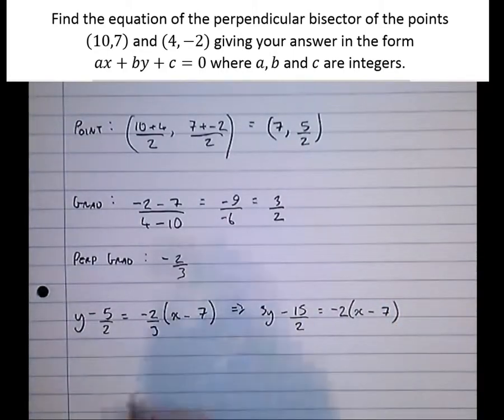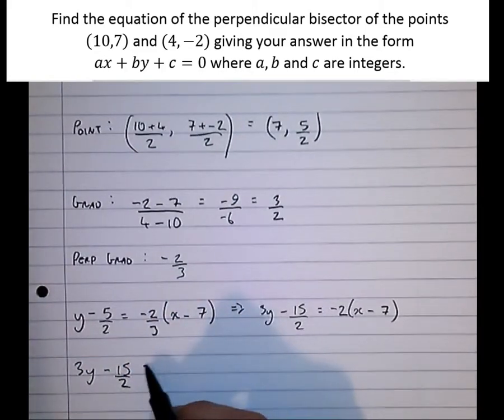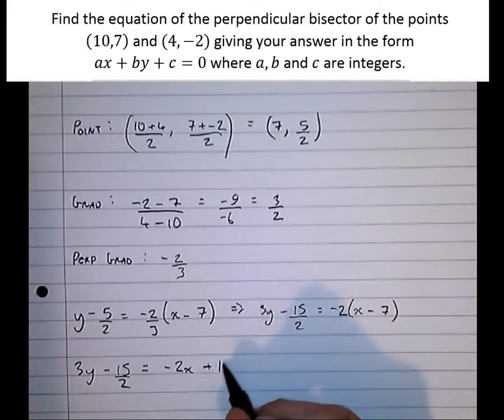Now let's multiply out those brackets. So we've got 3y minus 15 over 2 equals minus 2x plus 14.